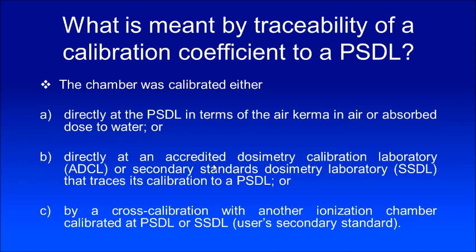When you measure output in your linear accelerator with your ion chamber, we say the ion chamber calibration should be traceable — we use this terminology 'traceability.' If you measure one gray for a certain amount of radiation, the same amount of radiation should produce one gray anywhere in the world. So there has to be traceability. When you say your measurement is traceable, that means the chamber you use is calibrated either in a primary standard laboratory directly for absorbed dose, or at an accredited dosimetry laboratory or secondary standard dosimetry laboratory which has a calibration with the primary standard.